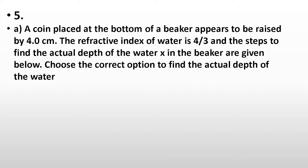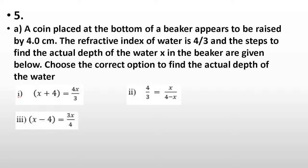Coming to question number five. A coin placed at the bottom of a beaker appears to be raised by 4 cm. The refractive index of water is 4/3 and the steps to find the actual depth x of the water in the beaker are given below. Choose the correct option. First: x + 4 = 4x/3. Second: 4/3 = x/(4 - x). Third: x - 4 = 3x/4. Fourth: 3/4 = x/(x - 4).